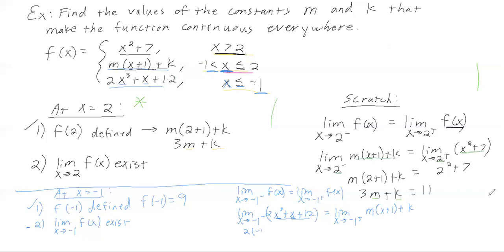Evaluating: 2(-1)³ + (-1) + 12 = 9. On the right side: m(-1+1) + k = m(0) + k = k. So 9 = k, meaning k equals 9. The left and right-hand limits are equal whenever k=9, so the limit exists and condition 2 is satisfied.